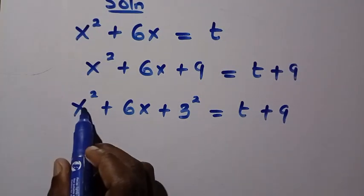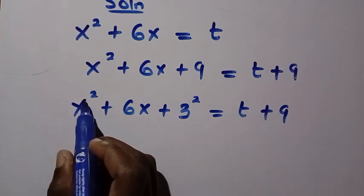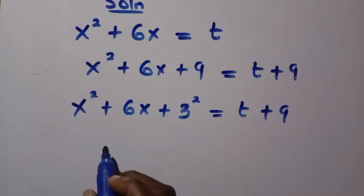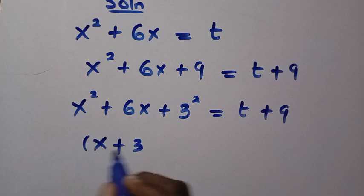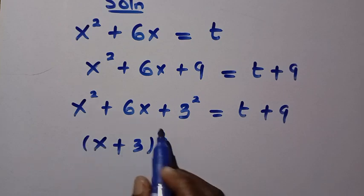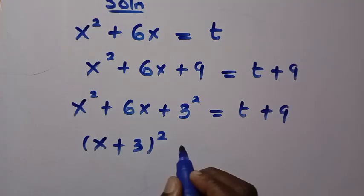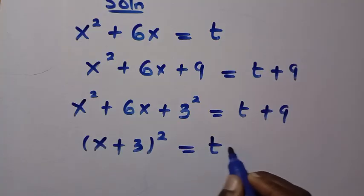This whole expression x² + 6x + 9 is given as (x + 3)². When we expand (x + 3)², we get this, and everything equals t + 9.